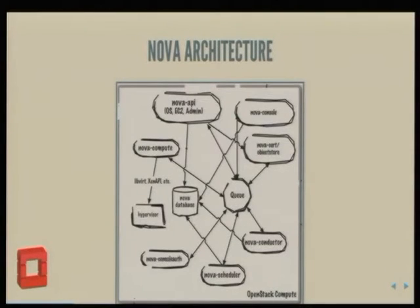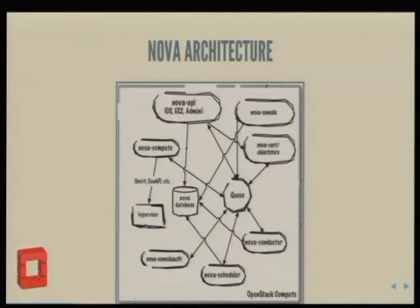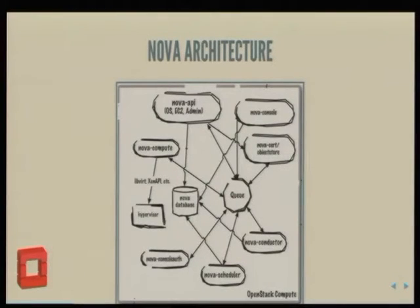This is a brief slide of the architecture. The important thing is that there's an API that accepts requests, and then there are message queues, so most of the stuff is asynchronous. The interesting thing I'm going to talk about in more detail is the Nova scheduler and how that presented some challenges for us. There's an API, and then it's dispatched to a queue where the scheduler decides where to place the VM, and then it gets done — or fails, but mostly gets done.